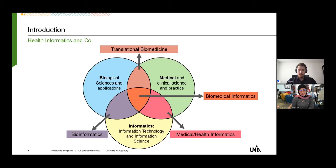Starting with the introduction, I would like to underline the differences between three disciplines: biological sciences and applications, medical and clinical science and practice, and informatics, which encompasses information technology and information science. In practice, these disciplines are not used independently. Informatics using biological data is called bioinformatics; informatics with medical and clinical science is called medical or health informatics; biological sciences with medicine is called translational biomedicine.